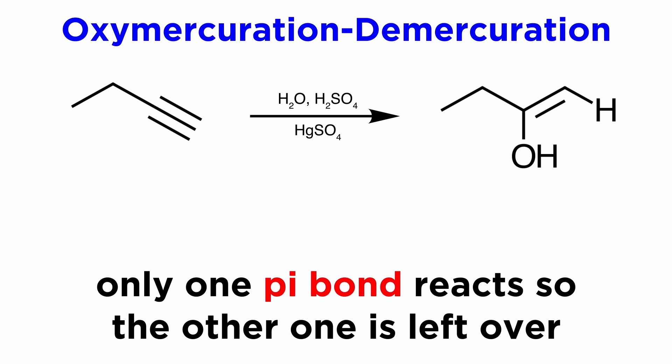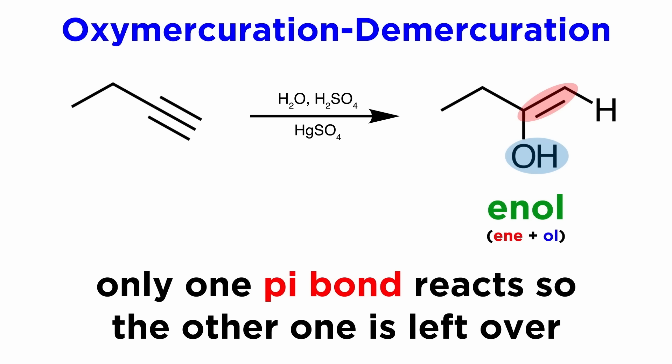But of course, since an alkyne has two pi bonds and only one pi bond will react, one pi bond will remain, and we are left with what is called an enol, since it is both an alkene and an alcohol — ene plus ol gives us enol.